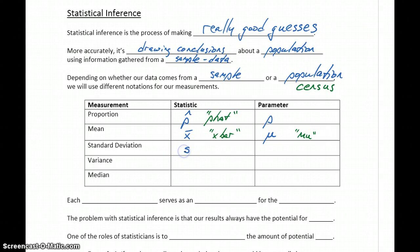For standard deviation, our notation is lowercase s. For population standard deviation, we're going to use the symbol sigma, which looks like an O with a tail sticking straight off the top of it. For variance, that's just our standard deviation squared, so we get s squared and sigma squared. And for the median, our sample median will be represented as m-bar, similar to how we had x-bar, and then as a parameter that will be represented as a lowercase m.